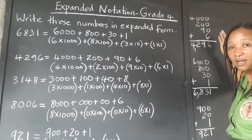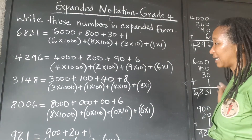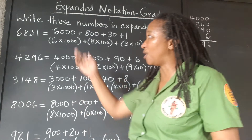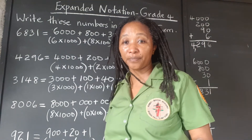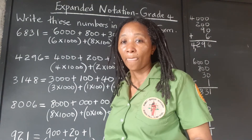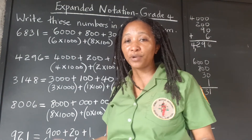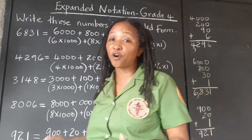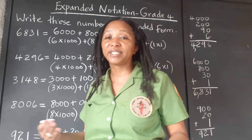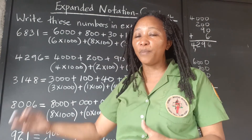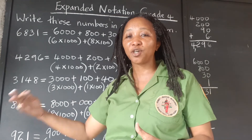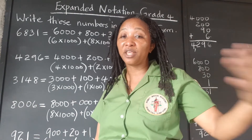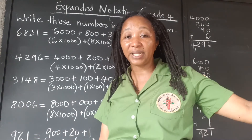So to recap: writing numbers in expanded form, we're simply showing how many hundreds, how many tens, how many ones, how many thousands — the sum of the products, with an addition sign in between and multiplication in the bracket. It's the face value of the digits times their place value, and we add them together.